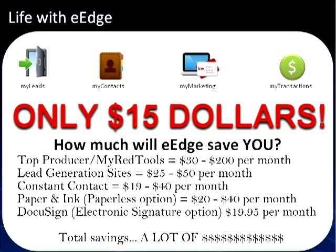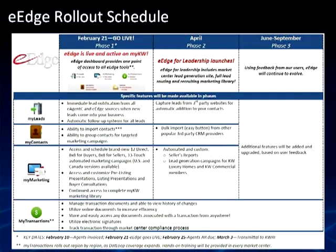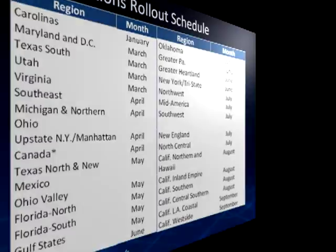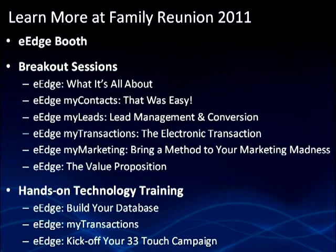eEdge does have a rollout schedule being sent out in phases. eEdge is going live February 21st and will be introduced at Family Reunion. Come April, phase two will roll out, which is more for leadership. June through September is when feedback will be given to KW, and once that feedback is received, additional features will be added and upgrades will come out. There's going to be hands-on training provided in every market center. At Family Reunion 2011, there will be a booth, breakout sessions, and hands-on technology training, so make sure you're there.